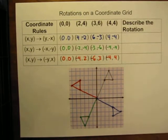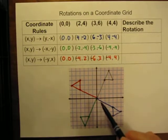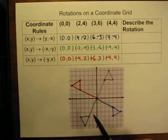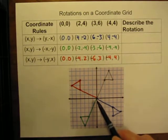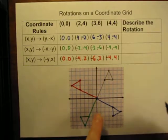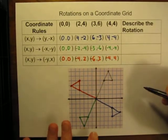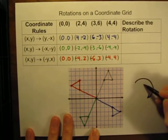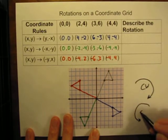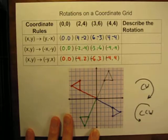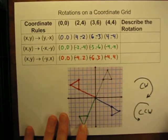Let's finish by describing these rotations. When describing rotations, the first thing we need to specify is the center of rotation — in all of these cases it is the origin. The other two things you need to describe are the number of degrees the shape rotates, and the direction: either clockwise, like the hands of a clock, or counter-clockwise, which is opposite the hands of a clock.